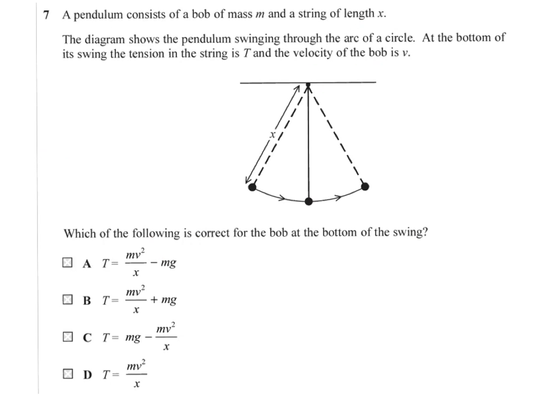Question 7. A pendulum consists of a bob of mass M and a string of length X. The diagram shows the pendulum swinging through the arc of a circle. And the bottom of its swing, the tension in the string is T. And the velocity of the bob is V. Which of the following is the correct expression for the bob at the bottom of the swing. So, we just need to remember that there must be a force towards the centre. And it must be a value of MV squared over R. So, the balance of forces at that bottom point must equal MV squared over R.